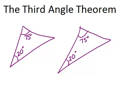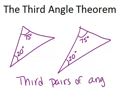then we can apply the third angle theorem. And what the third angle theorem says is that if you have a situation like this where two pairs of angles are congruent, then the third pairs of angles must be congruent as well.